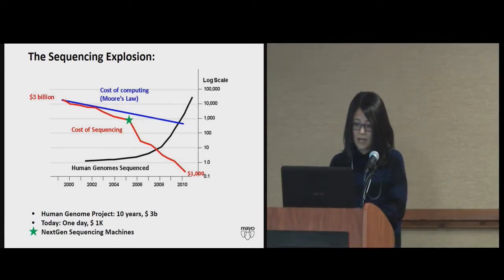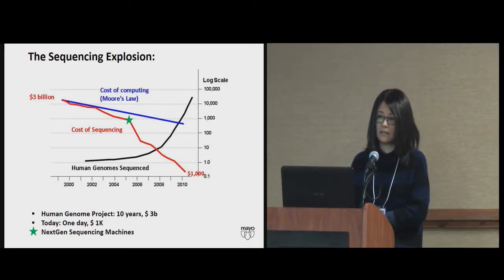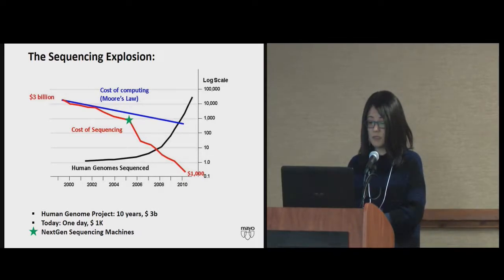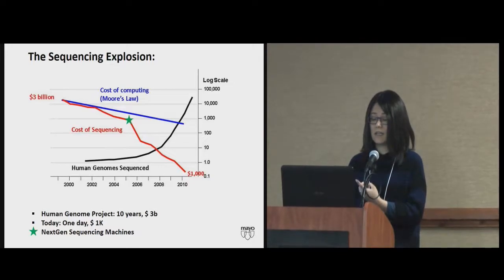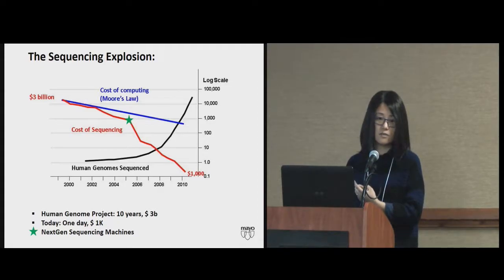In the last 20 years, the cost of sequencing has gone down dramatically. In 1997, when the Human Genome Project finished — the mapping and establishment of a reference human genome, which is one genome — it cost $3 billion dollars over 10 years. Today, you can sequence a person's genome in a lab in a day for only $1,000, and the cost is still going down.